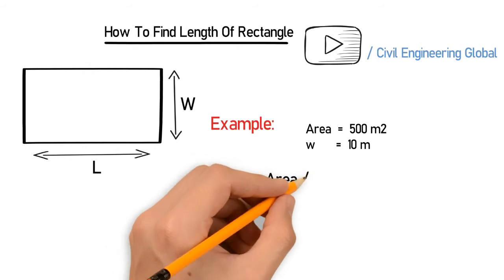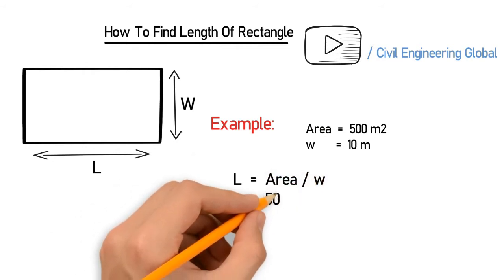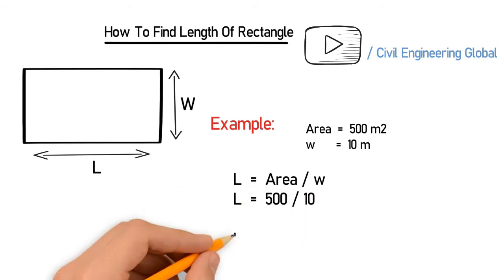So let's put the values of area and width, and you will get 500 divided by 10.